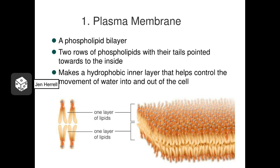The plasma membrane, or cell membrane, surrounds the entire exterior of the cell, and it helps the cell decide who comes in and who leaves. It also helps the cell communicate with its neighbors. Now this plasma membrane also extends inside the cell, especially in eukaryotic cells, and makes up what we know as the membranous organelles.